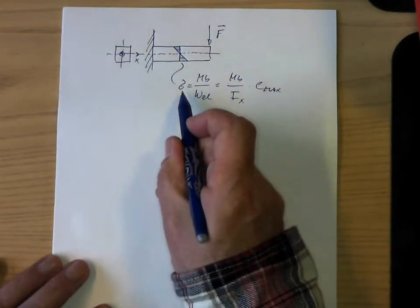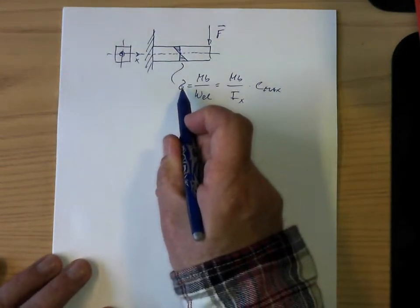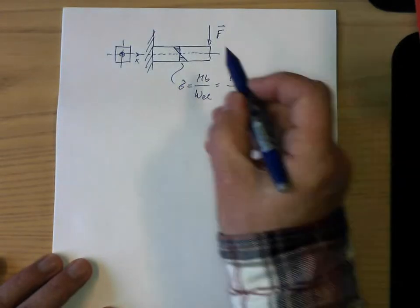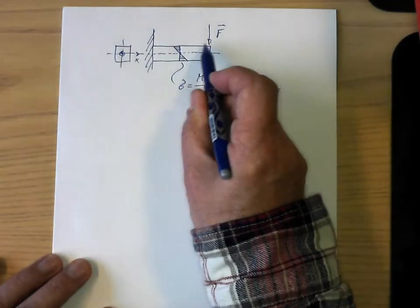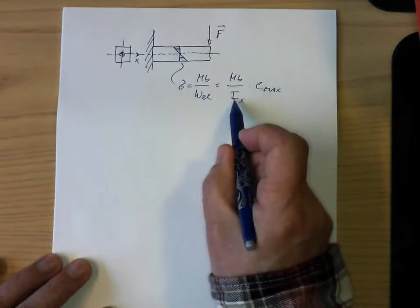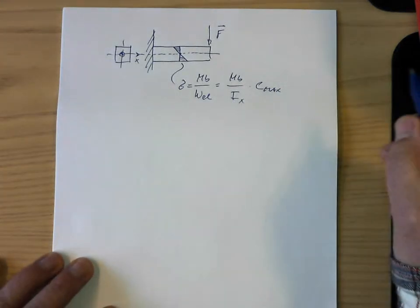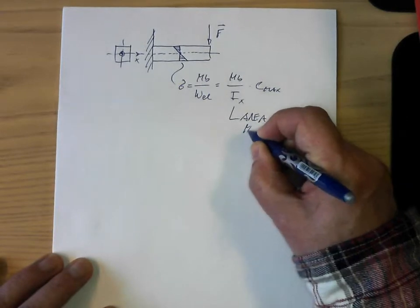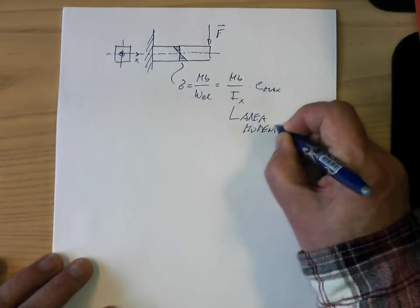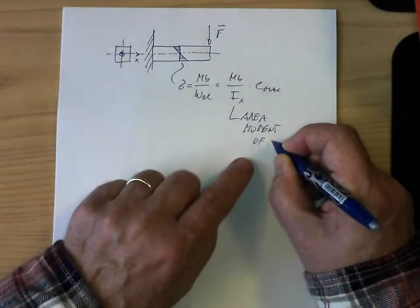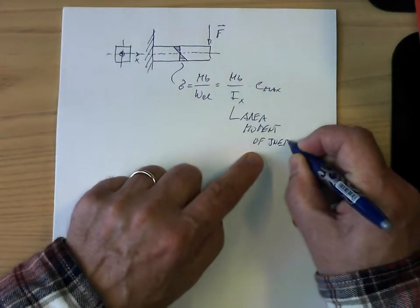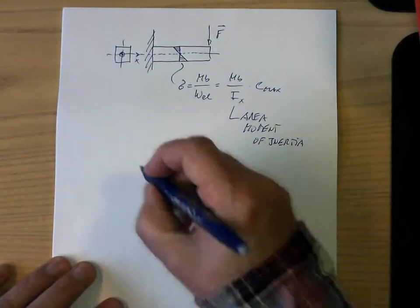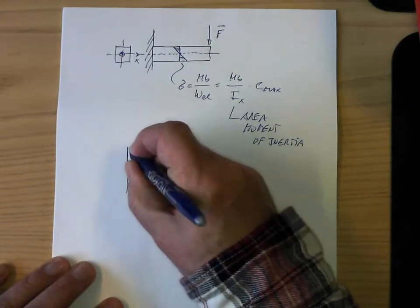Then I find this maximal stress. To calculate it, I need the moment — that's easy, it's the force times the length — but I_x is the area moment of inertia. This is easy to calculate if I have a rectangular cross section. Let me show you what that cross section looks like.